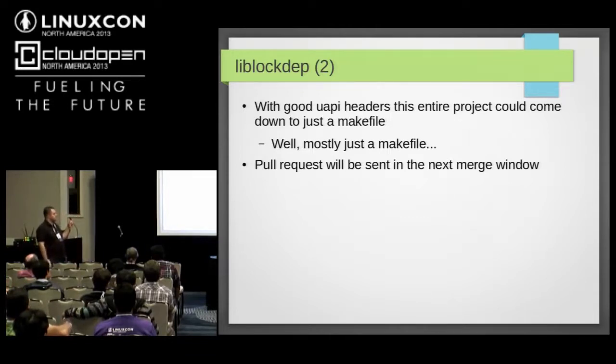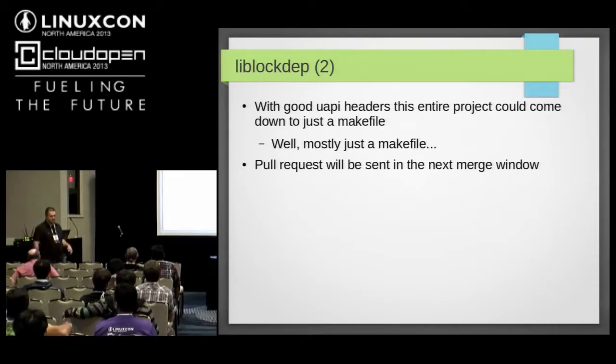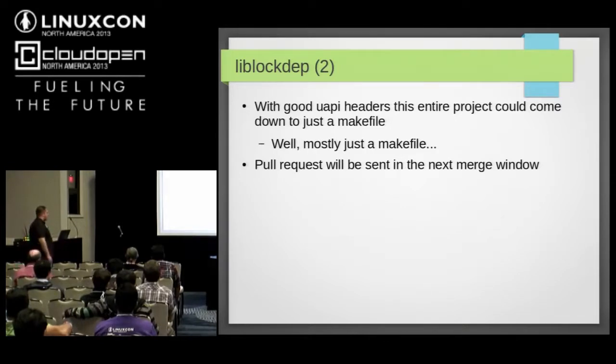If liblockedep had good UAPI headers when it was written, the project would pretty much be just a makefile that compiles kernel lockdep.c using UAPI headers — zero work. You'd provide a locking dependency analyzer to userspace that's been working for almost eight years and is proven to work, just by grabbing chunks of the kernel. It'll be mostly just a makefile. We still want the LD_PRELOAD thing in there, but the amount of code beyond that is pretty much nonexistent. Currently the pull request is somewhere in linux-next and it's bound to get to the kernel, hopefully next merge window.